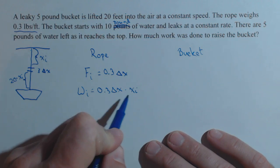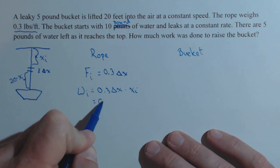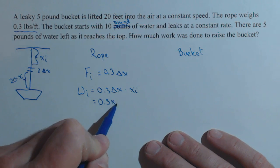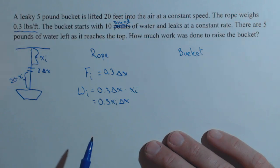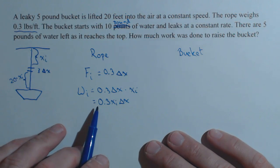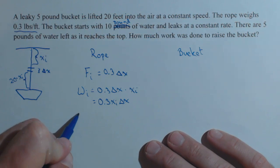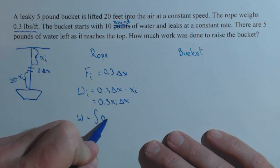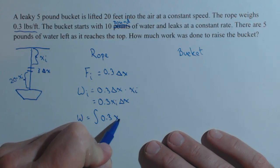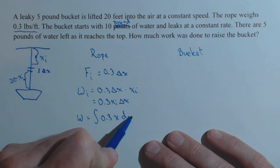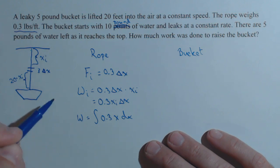Now, we may not necessarily like it being in this order, so we may say 0.3 x sub i delta x. Now that we have the work on the ith slice, we can find the work. It's going to be the integral of 0.3 x dx.